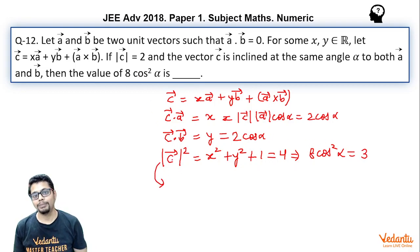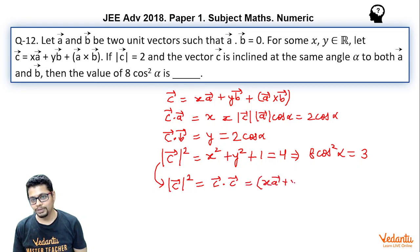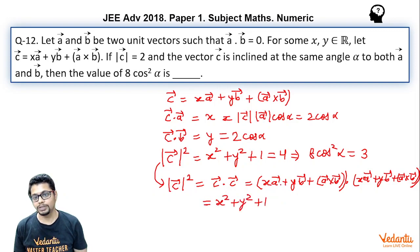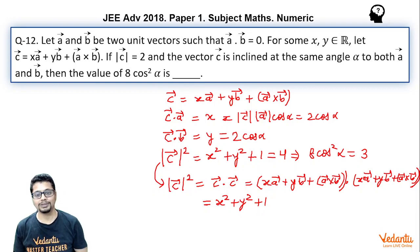Now you may wonder how magnitude of C vector squared equals X² + Y² + 1. Let me prove it. Magnitude of C vector squared can be written as C vector dot C vector, which means (XA vector + YB vector + A vector cross B vector) dot (XA vector + YB vector + A vector cross B vector). As you take the dot product, since A vector, B vector, and A vector cross B vector are all mutually perpendicular, you are left with X² + Y² + 1 only — because A vector dot A vector is 1, A vector dot B vector is 0, and A vector dot (A vector cross B vector) is 0. So magnitude of C vector squared is X² + Y² + 1.